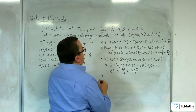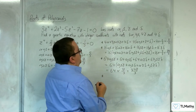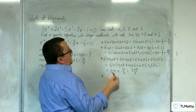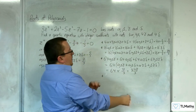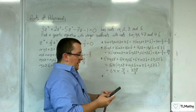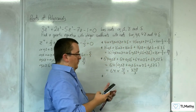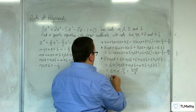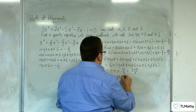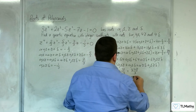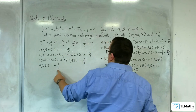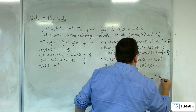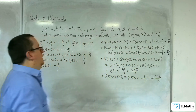Finally, the product of the four roots: 4 alpha × 4 beta × 4 gamma × 4 delta. That's 4 to the power of 4, which is 256. So 256 alpha·beta·gamma·delta = 256 × (-1/3) = -256/3.